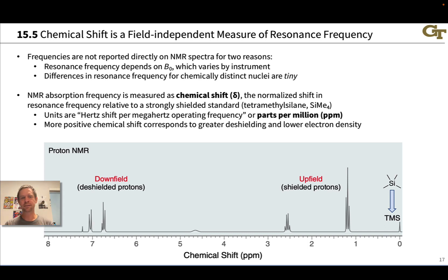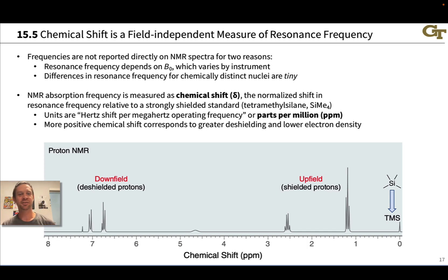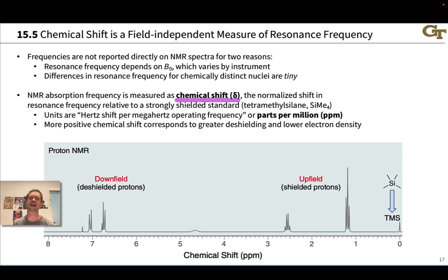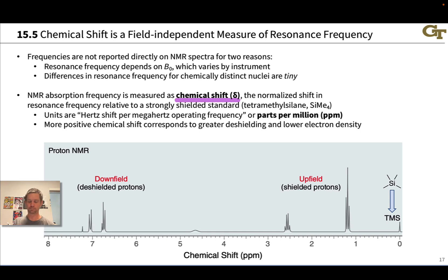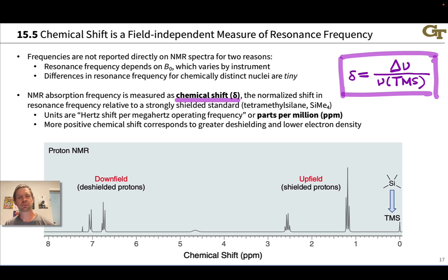For these reasons we convert frequency into an instrument-independent measure of frequency known as chemical shift, and this is the x-axis of any NMR spectrum. Chemical shift is the normalized shift in the resonance frequency or precession frequency relative to a standard, which is typically tetramethylsilane, TMS, Si(CH3)4. A mathematical representation of this is shown here.